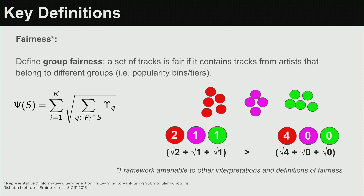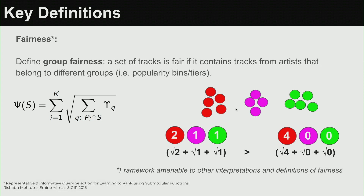We want a function that says considering artists from different groups is more fair than considering artists from just one group. If I only show recommendations from the most popular artists, that's unfair; if I show artists from the entire spectrum, that's fair. For example, if I have a budget of four and three groups: picking all four from one group gives a lower value than picking two from one group and one each from the others, so this function quantifies multi-group selection.